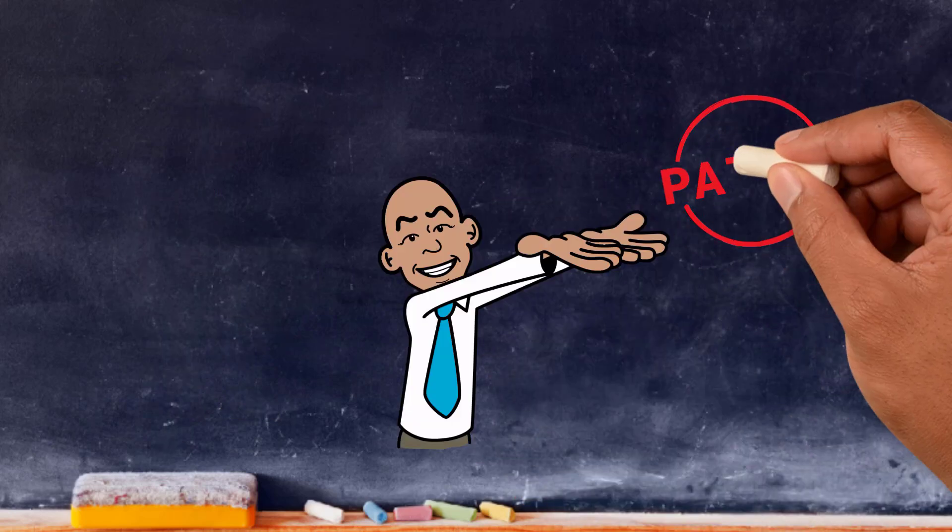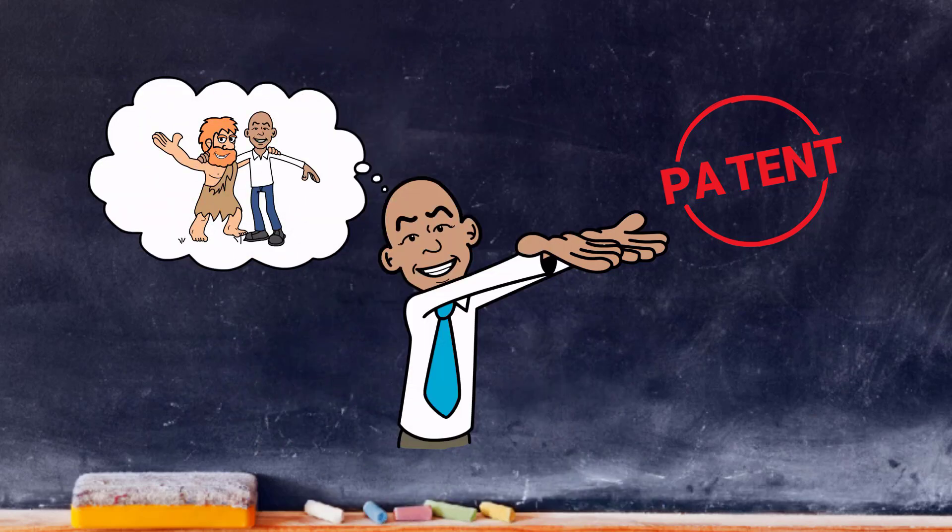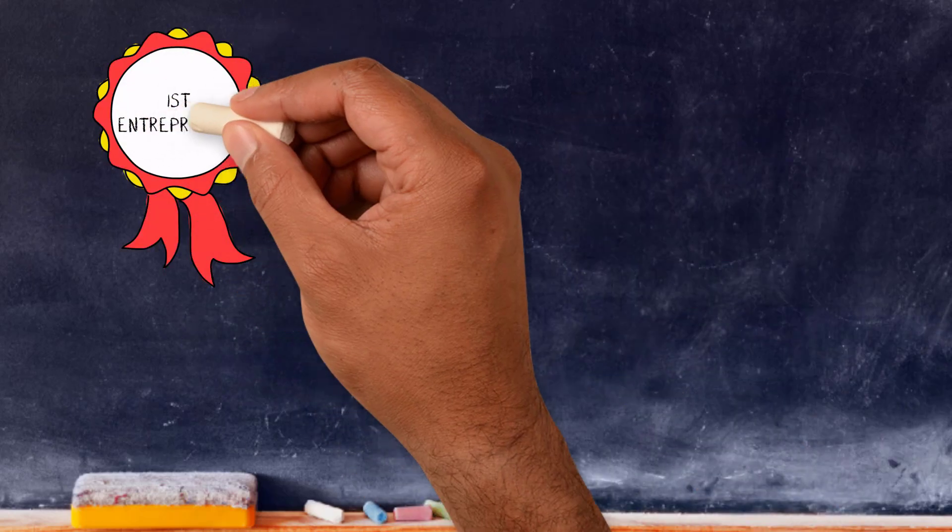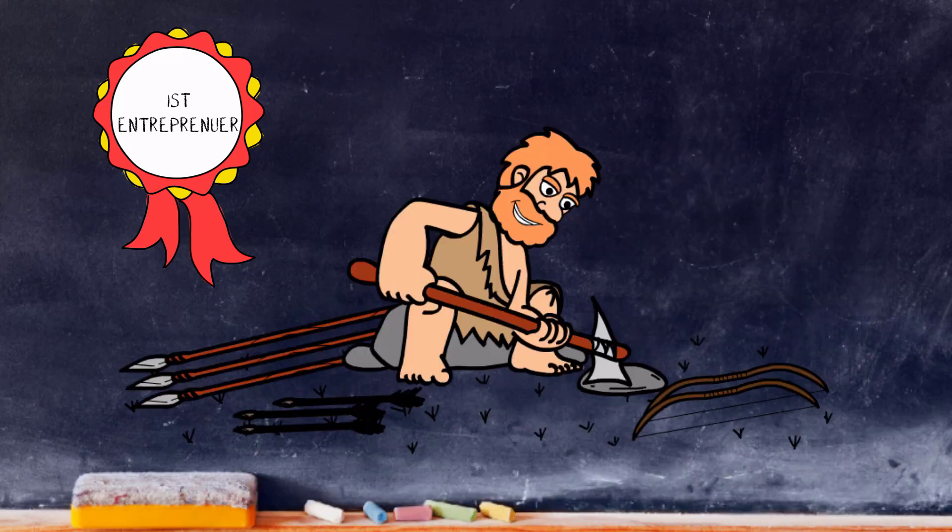If patents had been around in the stone age, I know someone who would have been at the front of the queue to get one. Meet my caveman pal, Rab the Rockstar. He was the world's first entrepreneur when he set up his own business that designed and made tools for his pals to hunt with.